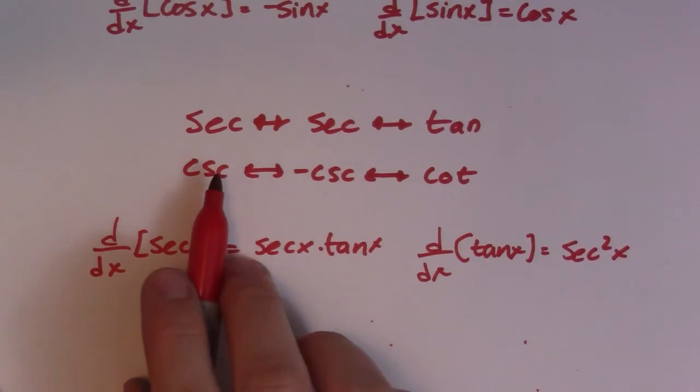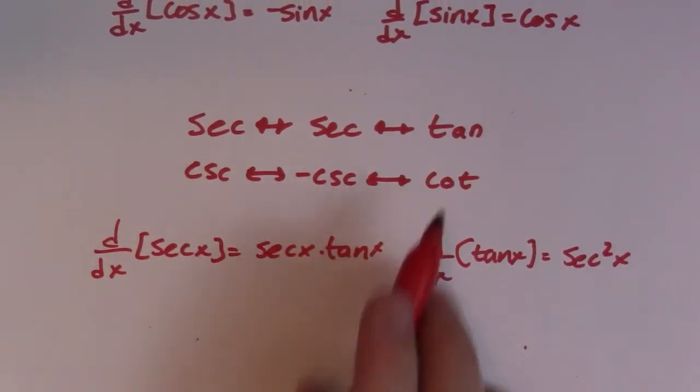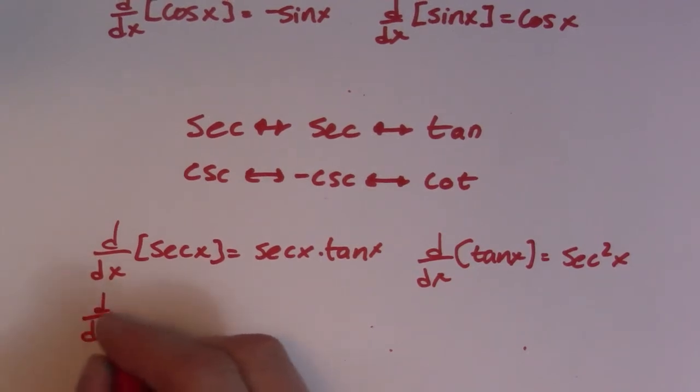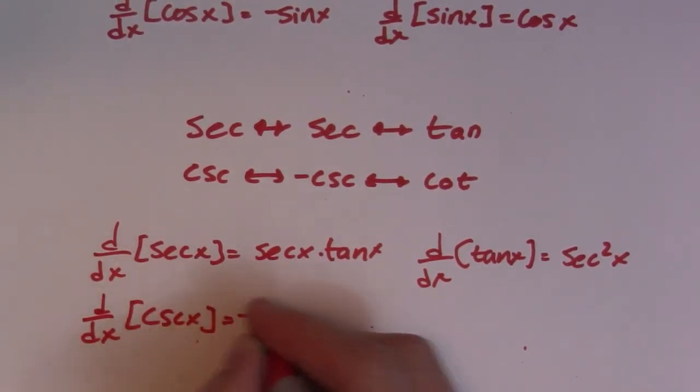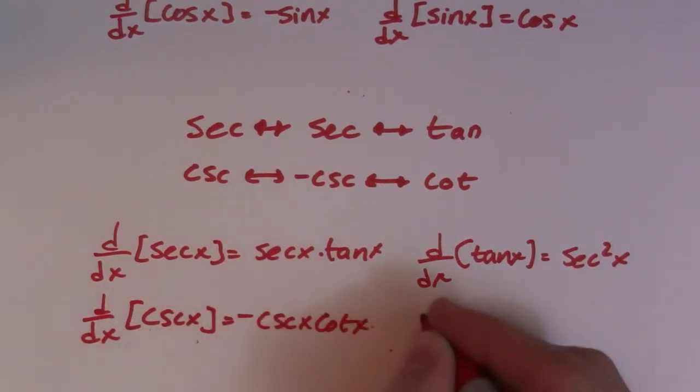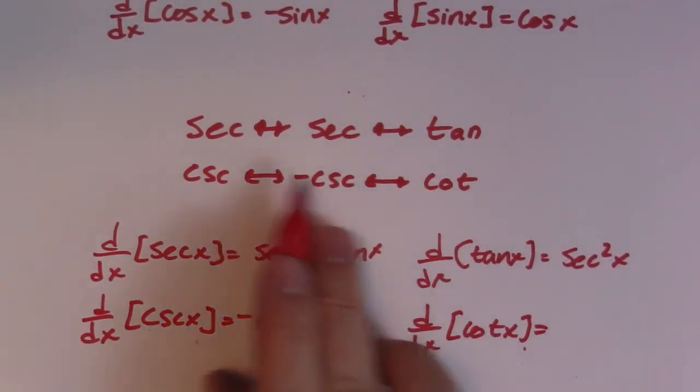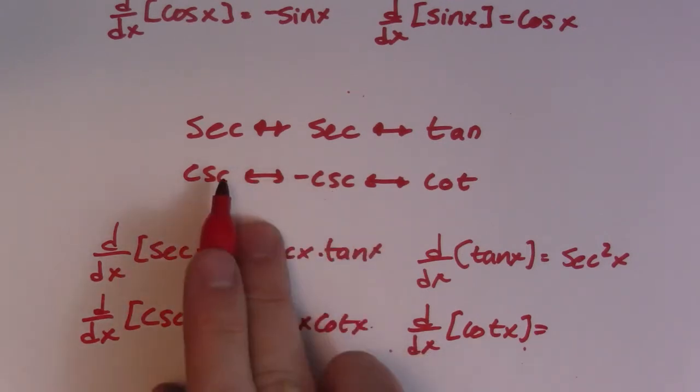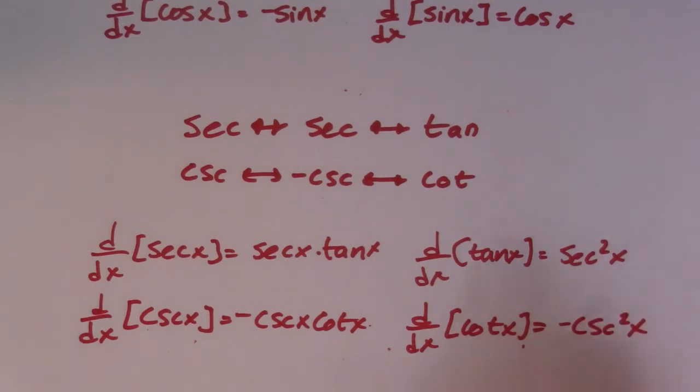So it works the same for this guy. So the derivative of cosecant is negative cosecant cotan. So the derivative of cosecant x is negative cosecant x cotan x. And then lastly, we have the derivative of cotan of x. So the derivative of cotan is negative cosecant squared. So negative cosecant times cosecant is negative cosecant squared x.